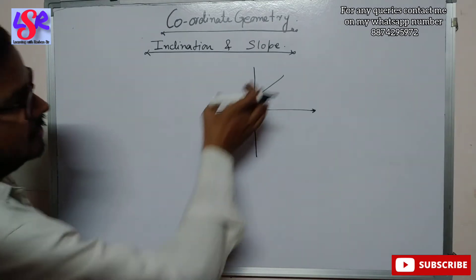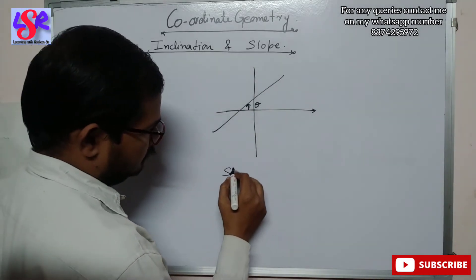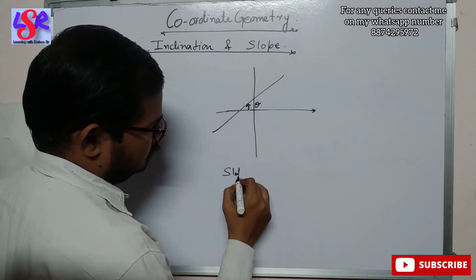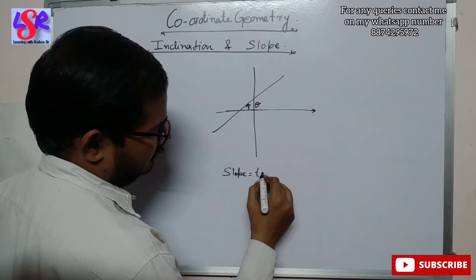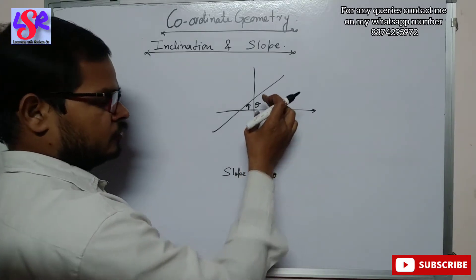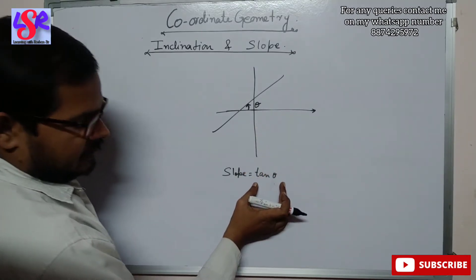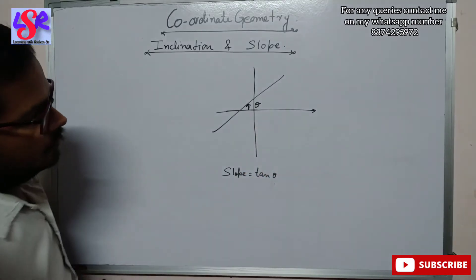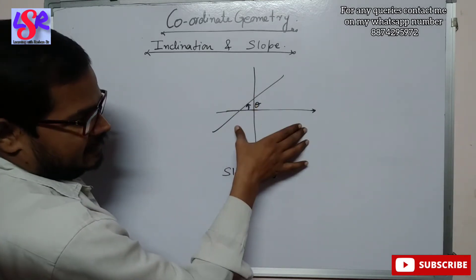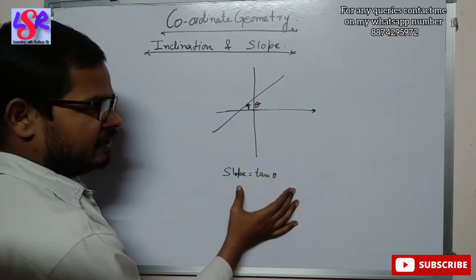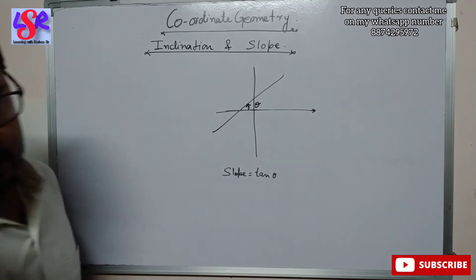When we talk about slope, the slope is equal to tan theta. If we have a line in which theta is the inclination of the line, then tan theta becomes the slope. So theta is the inclination of a line on the x-axis and tan theta is the slope of that line.